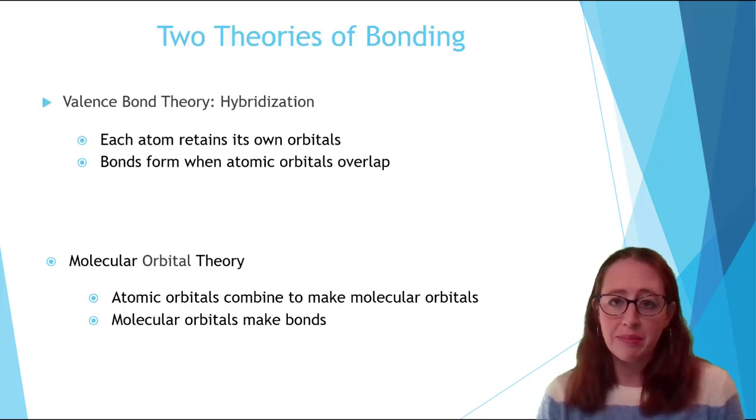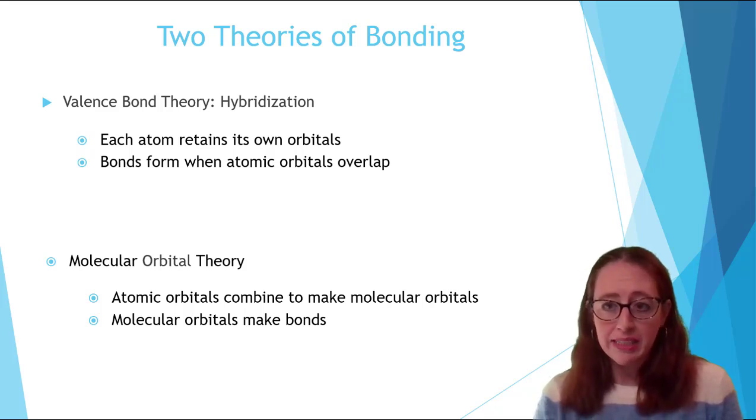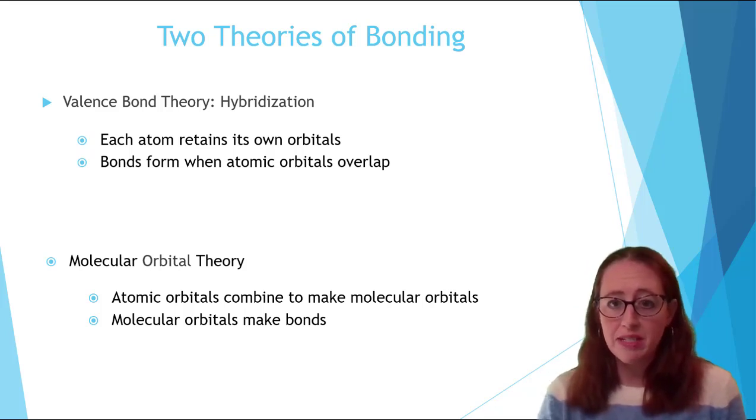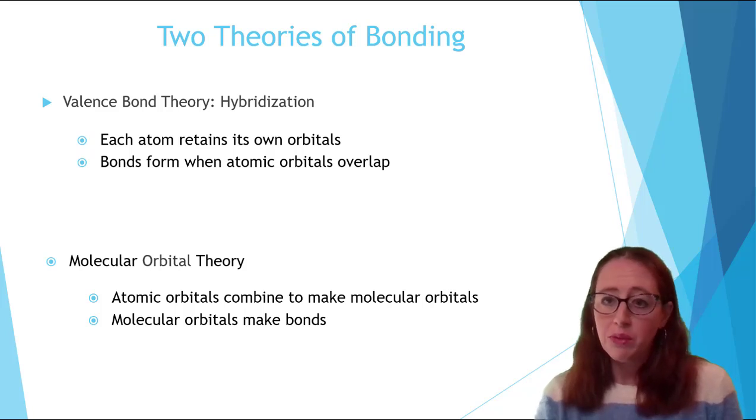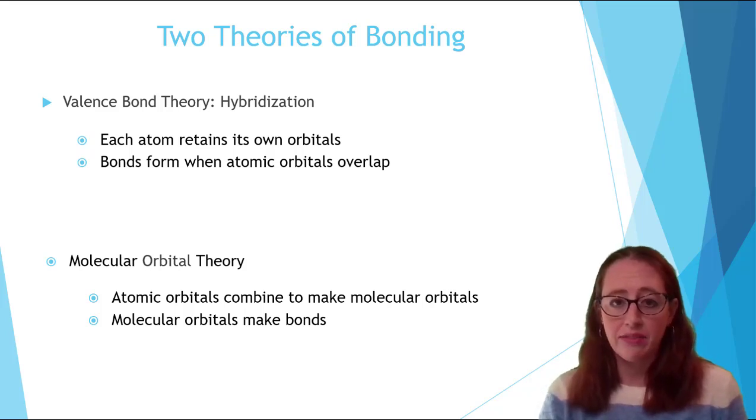First, let's remind ourselves of some context and compare and contrast our two models for bonding. In MO diagrams, which are not in this video, we combined atomic orbitals from different atoms to form new molecular orbitals, which then created our bonding and antibonding orbitals. If you need a refresher on this, I'll add a link until the end of the video.